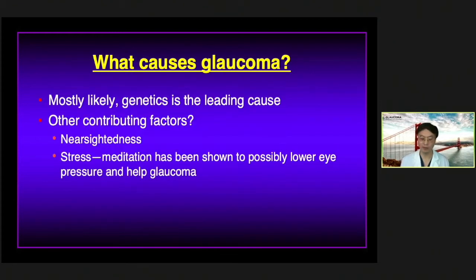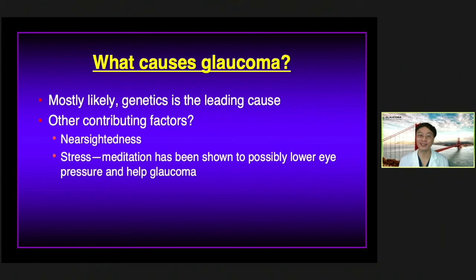What are the causes of glaucoma? Patients often ask why they got it. The truth is it's probably mostly genetic, based on what we know from studying genetics and possible environmental factors. Contributing factors can include being more nearsighted. There may also be some environmental reasons — one that has been looked at recently is the role of stress. Some of the best indirect evidence for that comes from studies showing that meditation can actually lower intraocular pressure and also influence factors that may develop into glaucoma.